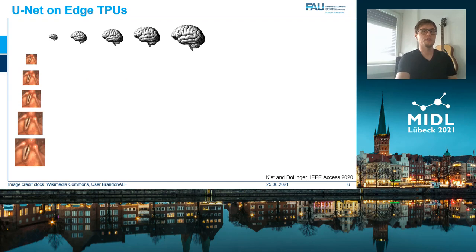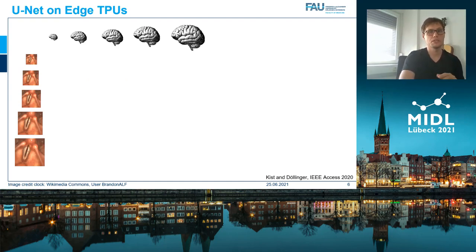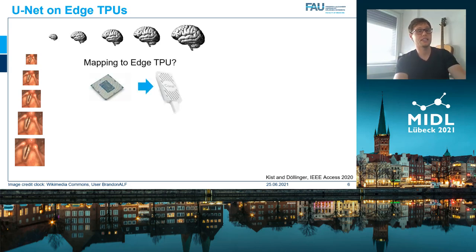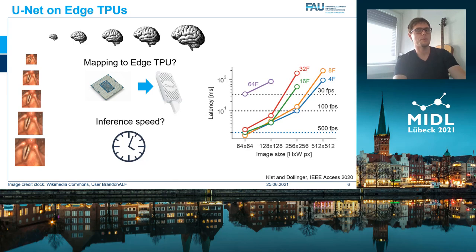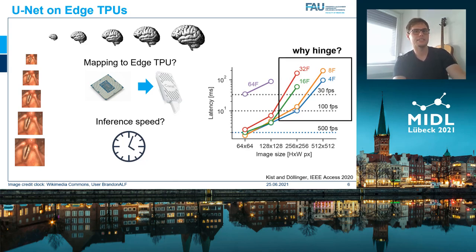The new TPU environment had not been tested on U-Net so far, so we investigated different network configurations. We particularly focused on image and network size, asking which configurations are actually mapped to the TPU and how fast the inference is. We found that some especially very large models are either not mappable or relatively slow. Interestingly, we found a hinge in the latency that we further investigated.